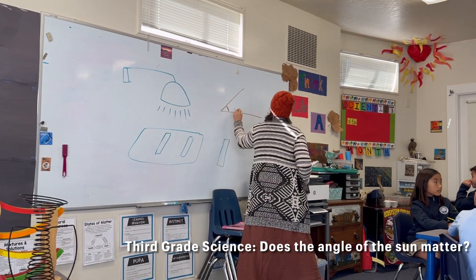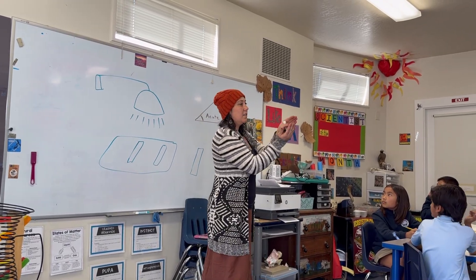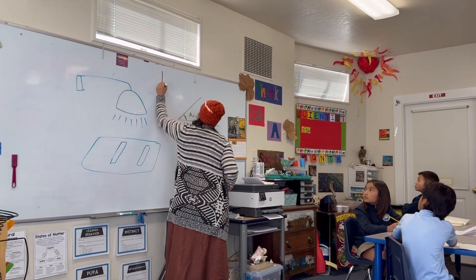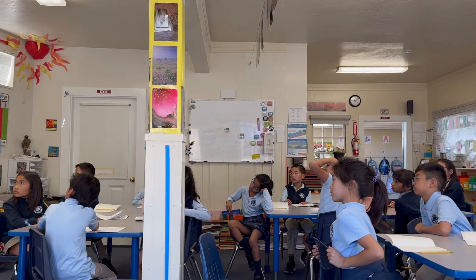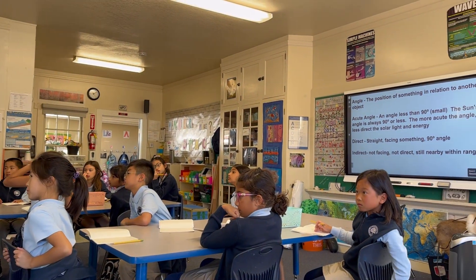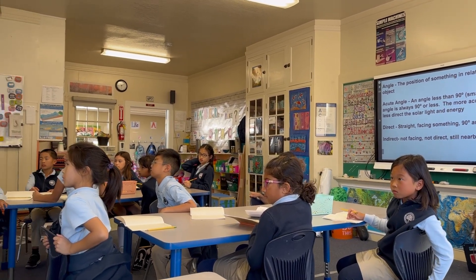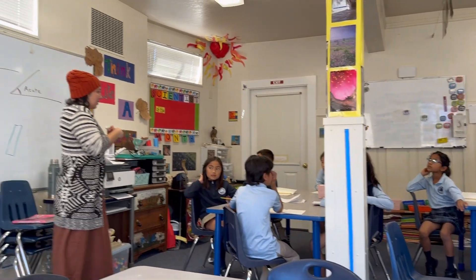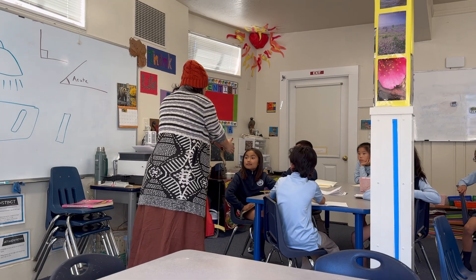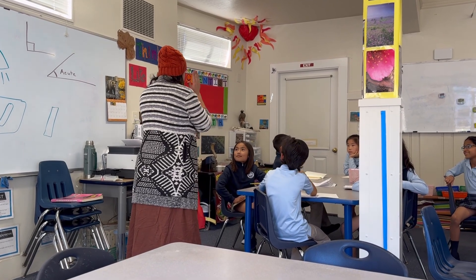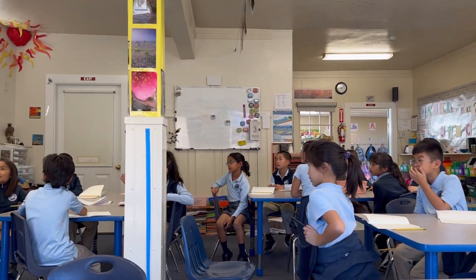An acute angle is tiny — it's less than 90 degrees. 90 degrees is that angle where you could put a box in the corner. The angle that the Sun is at is always 90 or less; it can't be more than 90 because then the Sun's on the other side. The most direct you could be in front of something is 90 degrees. If I'm standing right in front of Chloe, facing each other, that's a direct 90 degree angle.